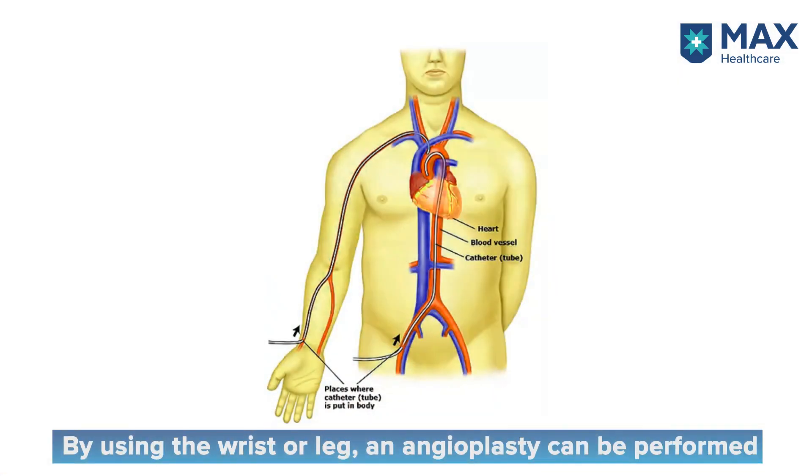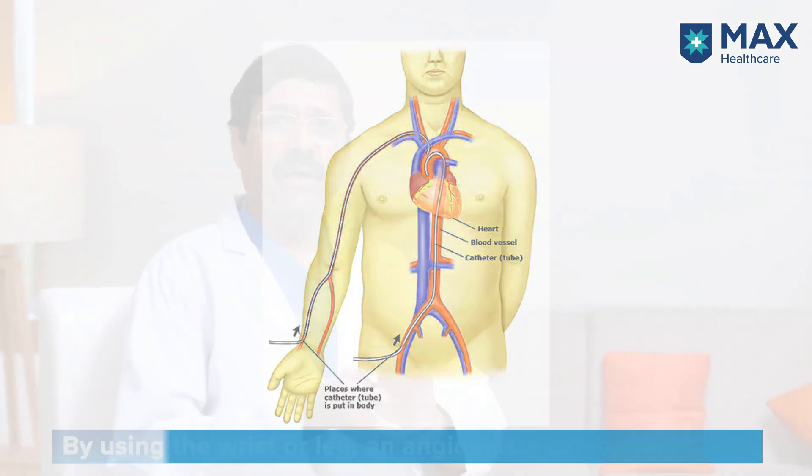Now we should know how we do the angioplasty. Angioplasty is done either through the wrist or through the groin. In the majority of cases we take access from the wrist, where we apply local anesthesia, puncture the radial artery, and insert a sheath. Through this sheath, we pass all the guide wires, balloon, and catheter.